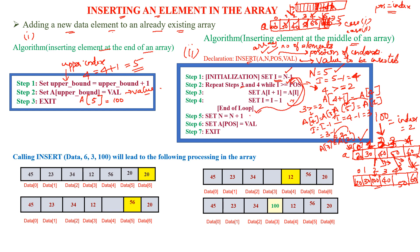After exiting the loop, N is updated: N equals 5 plus 1, now N equals 6. Index 2 is now free. So A[position] — that is A[2] — is assigned the value 100. Exit. Hope you have understood this algorithm.